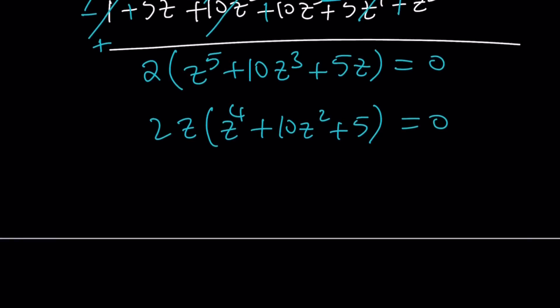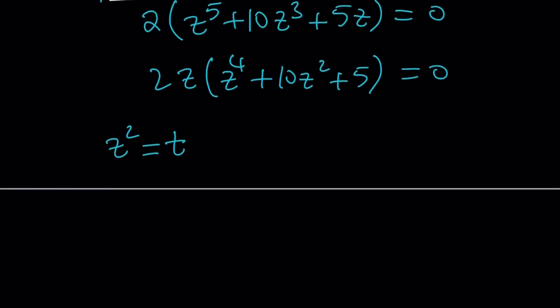And by way of substitution here, we can set z^2 equal to t, and then that gives us t^2 + 10t + 5. And from here, we can basically look for the solutions. So t is going to be -b, plus minus the square root of b^2...